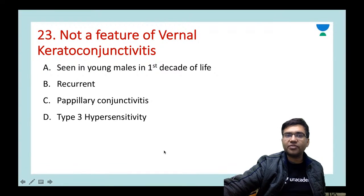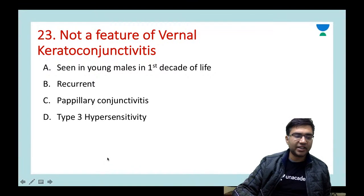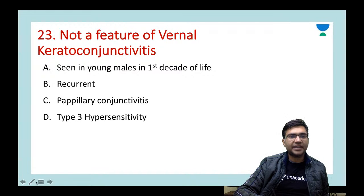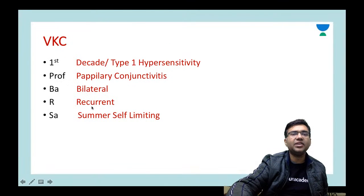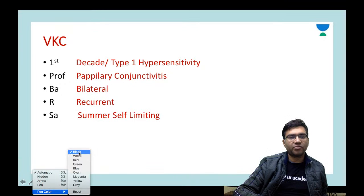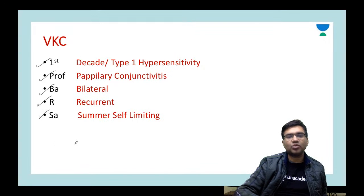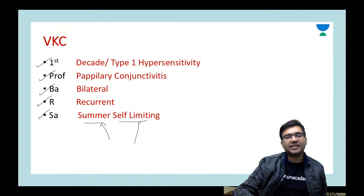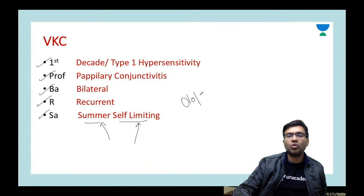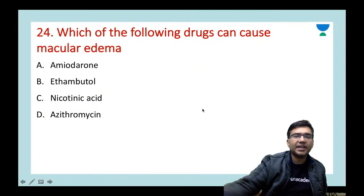Next question: which is NOT a feature of vernal keratoconjunctivitis? Options: seen in young males in the first decade of life, recurrent papillary conjunctivitis, or type 3 hypersensitivity. The answer is type 3 — it is actually type 1 hypersensitivity. Remember the mnemonic 'First Prof BURSA': First = first decade, P = papillary conjunctivitis, B = bilateral, R = recurrent, S = summer/self-limiting. An important drug used is olopatadine (antihistaminic + mast cell inhibitor).